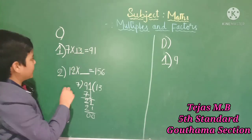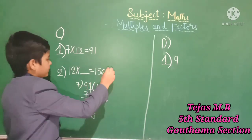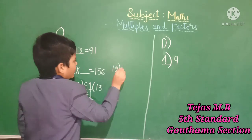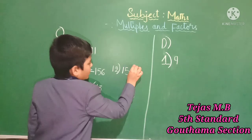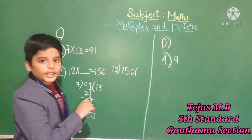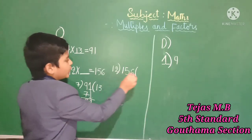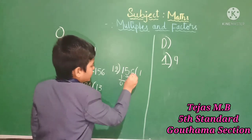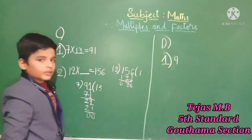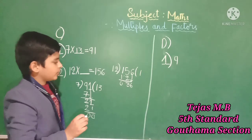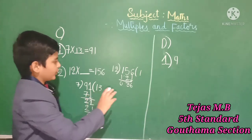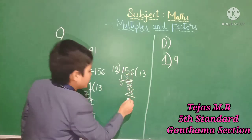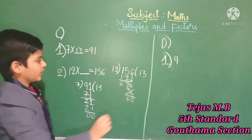Let us move to the next problem, that is the second one. 12 times dash equals 156. We want to divide. Write 12 here and 156 here. In the 12 tables, 15 is not coming exactly, so we take the lesser number: 12 times 1 is 12, with 0 remaining, bring 3 down. In the 12 tables, checking: 12 times 3 is 36. It is equally divided, so we write the quotient in the multiplier place: 13. So 12 is a factor of 156.